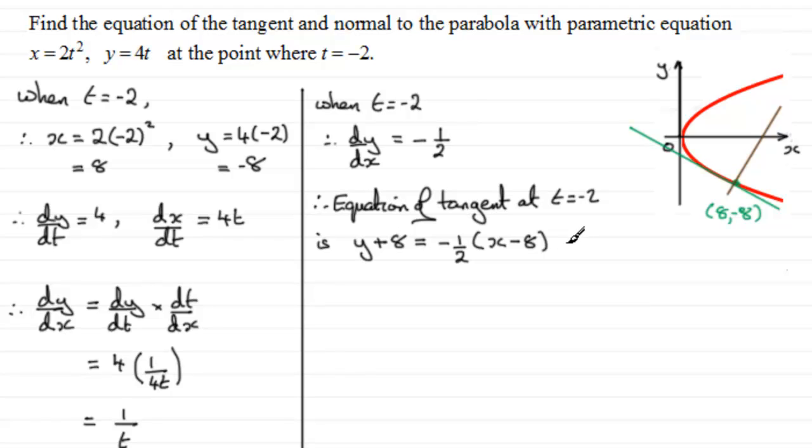And when it comes to finding the equation of the normal here, all we need to do is get the reciprocal of this gradient and then negate it. In other words, we've also got the gradient of the normal at t equals minus 2. Well, that's going to be equal to 2. If we reciprocate this and change the sign as well, you're just going to get 2.